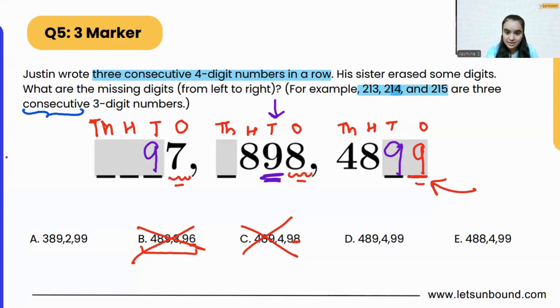If we check the hundreds place, we are having 8 and here as well 8. So that means in the very first number, we will have 8 again.